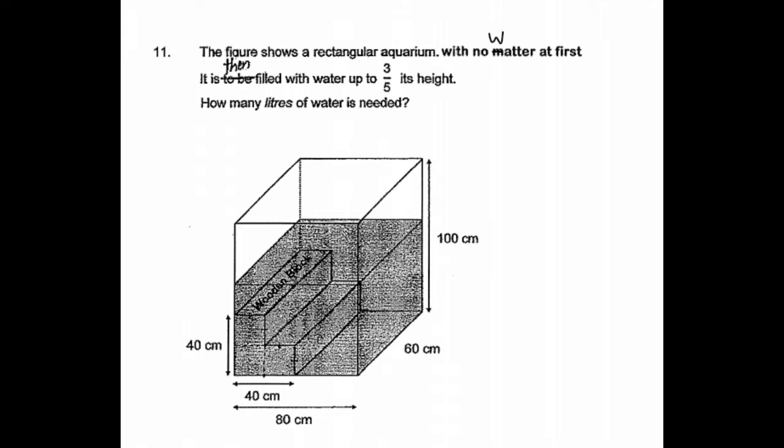The figure shows a rectangular aquarium with no water at first. It is then filled with water up to three-fifths its height. How many liters of water is needed to fill until three-fifths of its height?